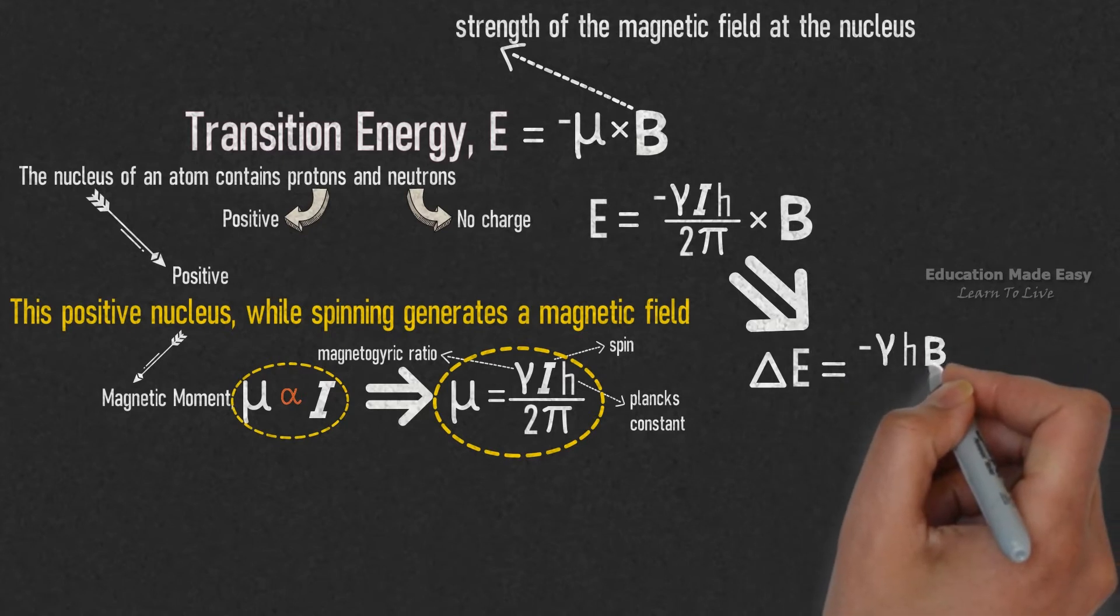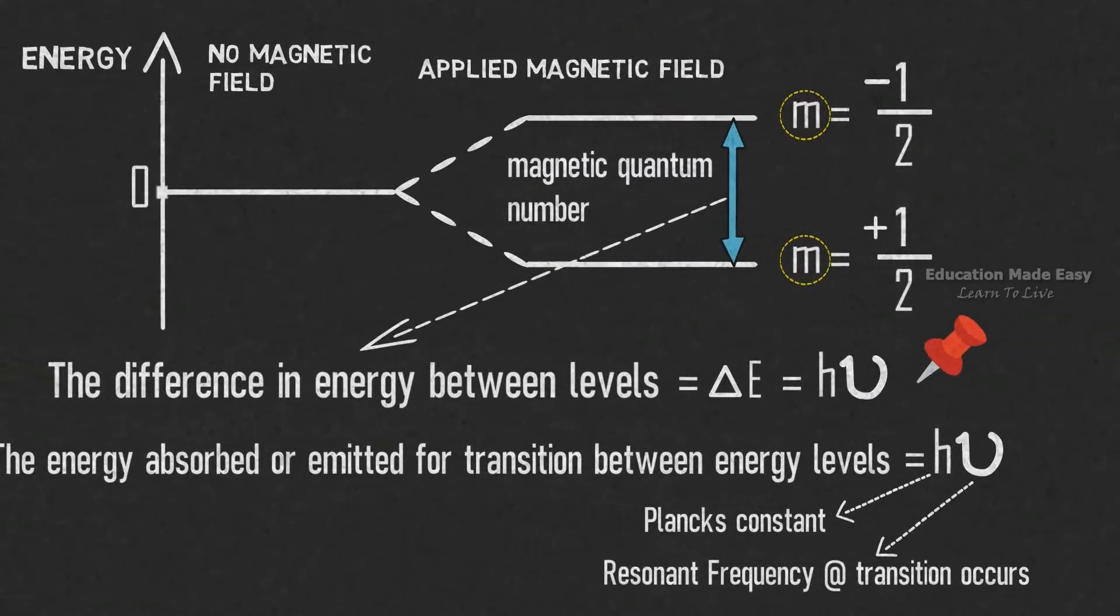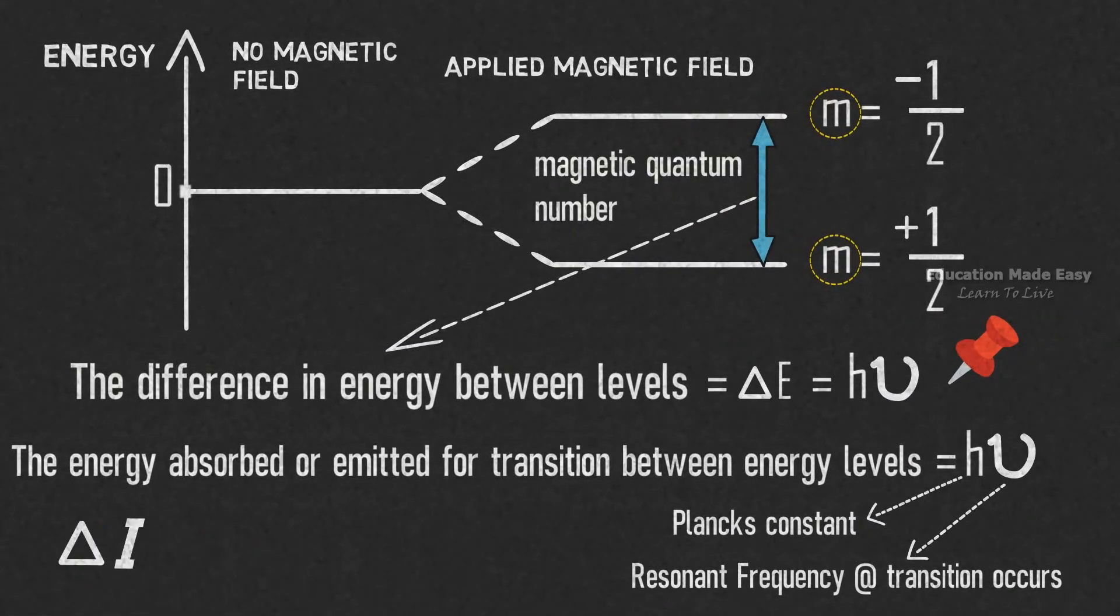Here, ΔI is the difference between magnetic quantum numbers. We can see the values of magnetic quantum numbers m.